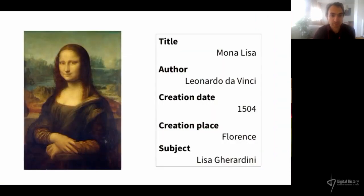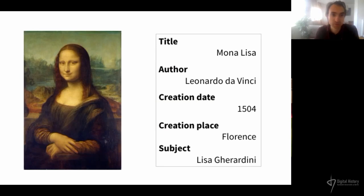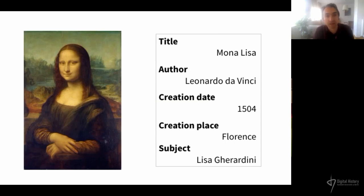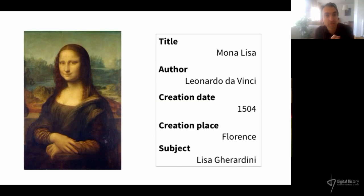I have a small example here. I suppose you know what this picture is — this is the Mona Lisa. If we want to describe it in the usual record form way, we can say that the title of this painting is the Mona Lisa, the author is Leonardo da Vinci, the creation date is 1504, it has been created in Florence, and the subject of this painting is Lady Lisa Gerardini.